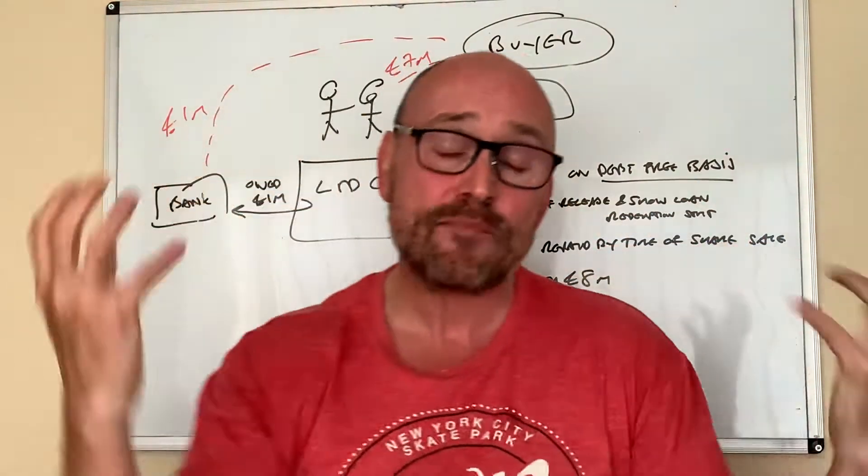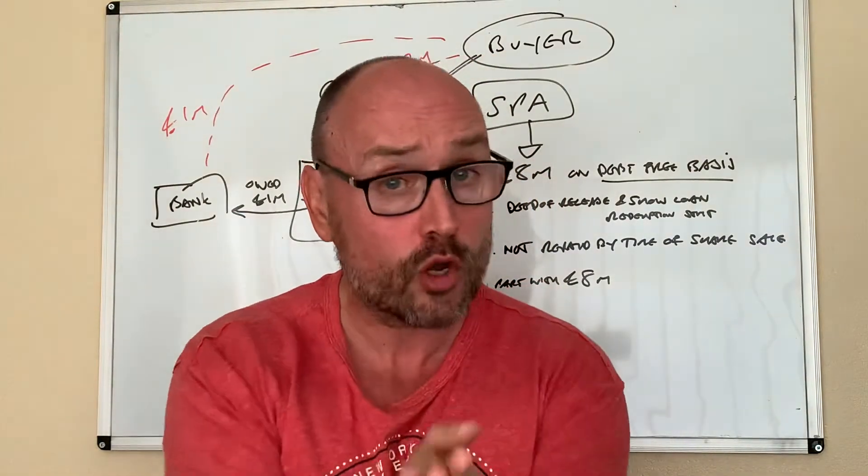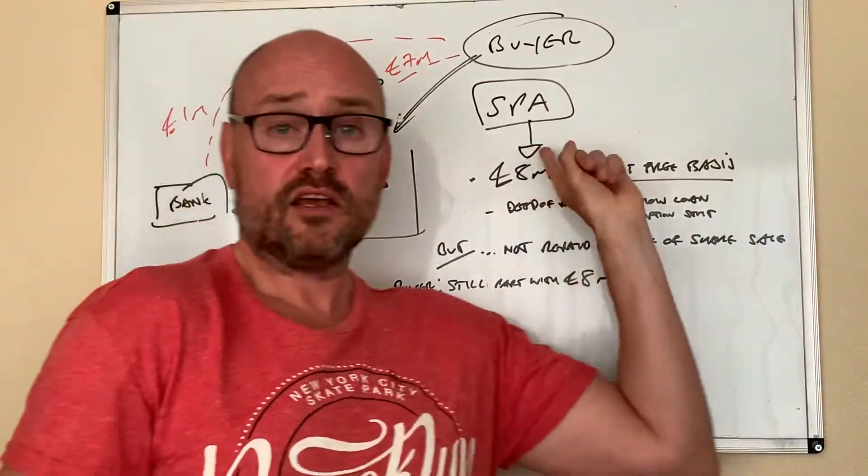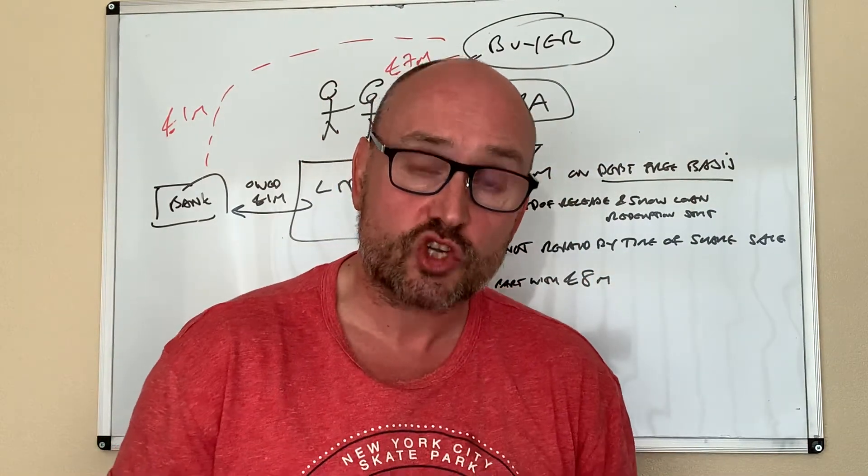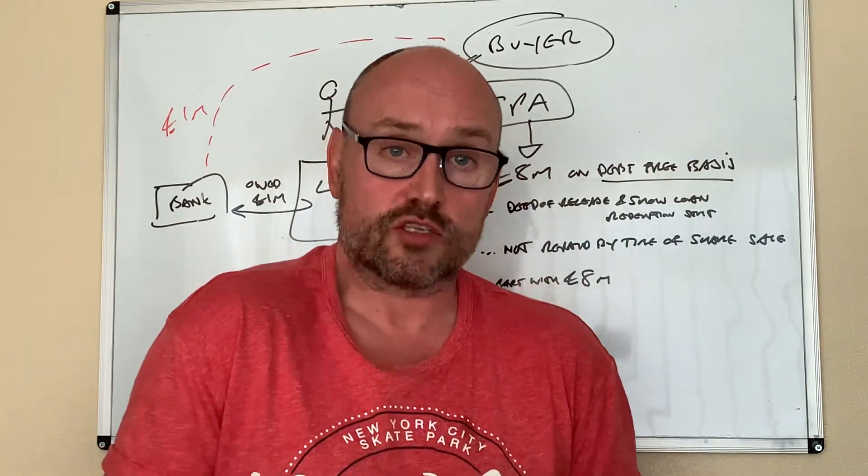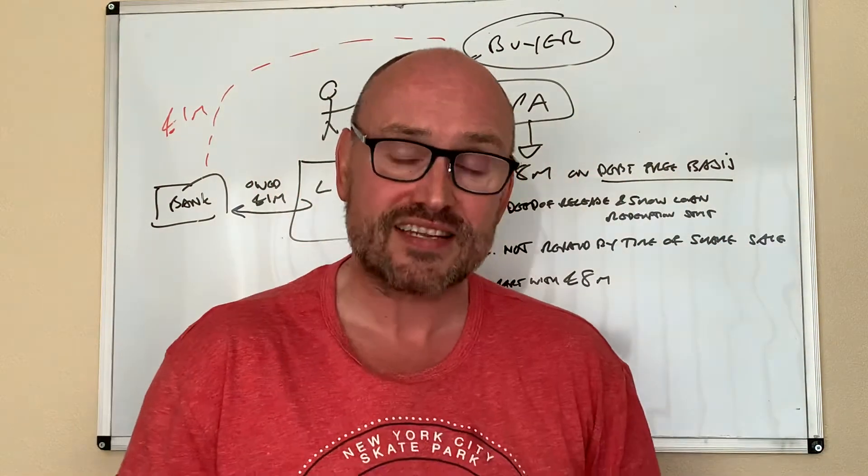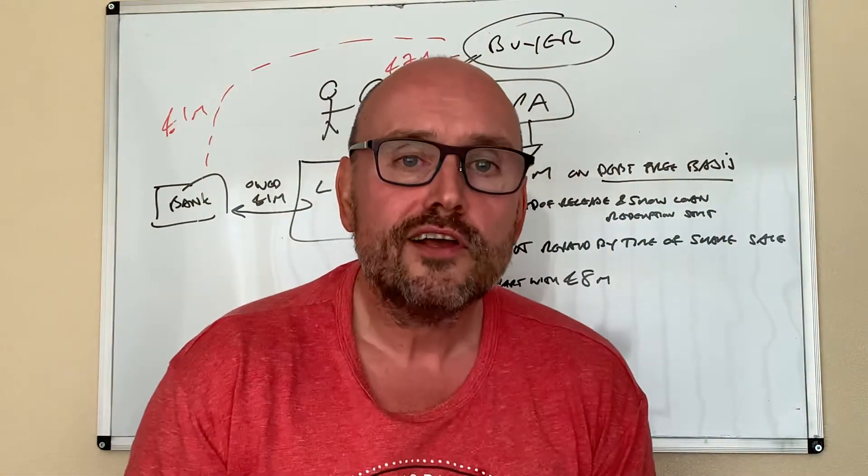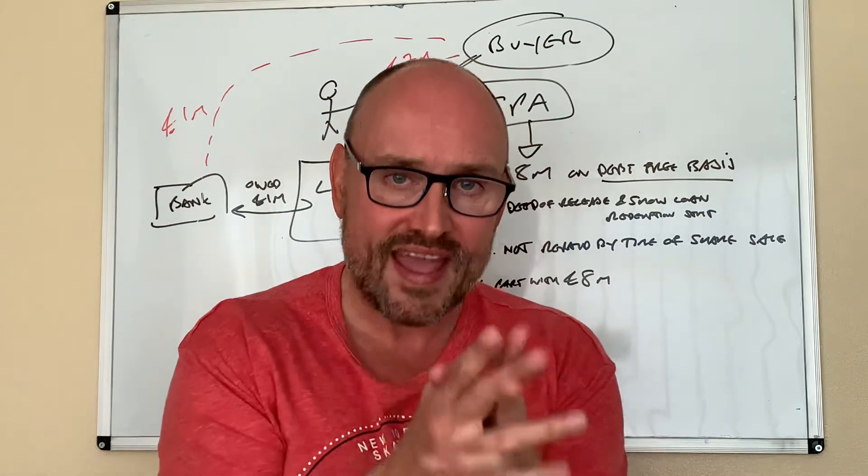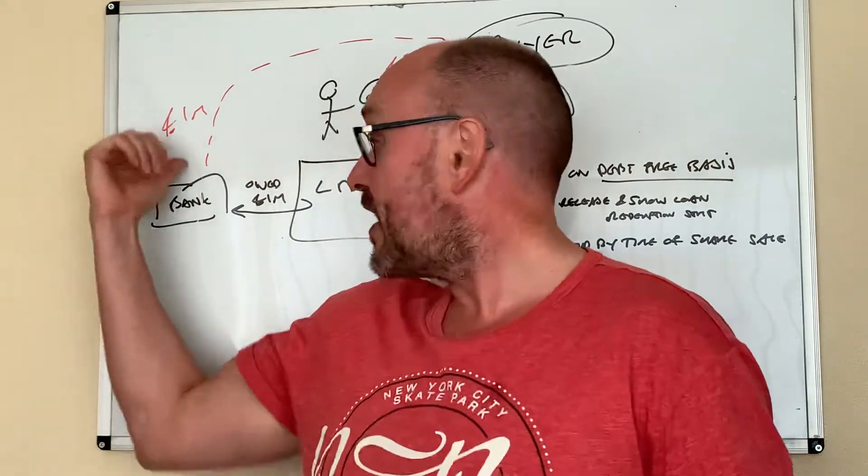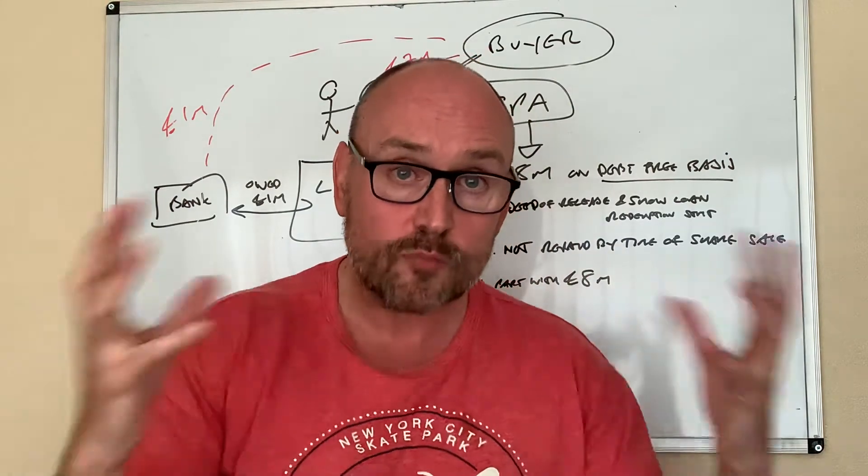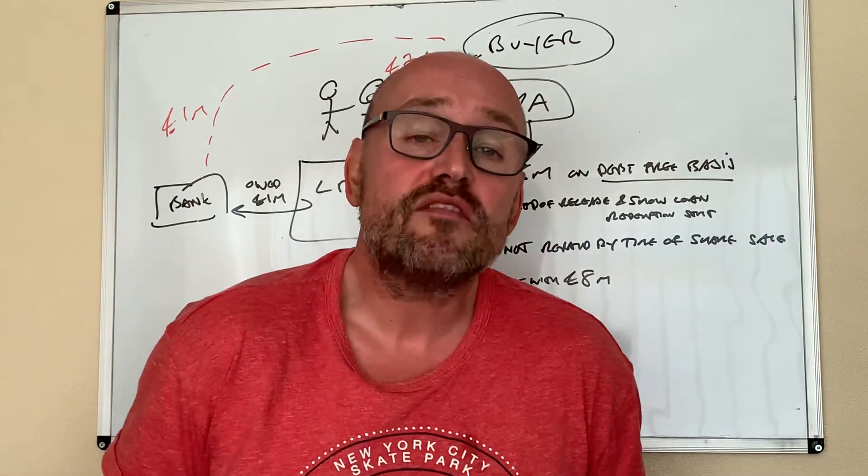Now this is just an example again of how you've got to get the paperwork right. Because had the SPA, had there been something that changed, a clause, this thing been rewritten and basically said, look, the buyer will pay seven million for the shares and pay off the bank one million. If that was all part of the deal in writing, that would have been fine, but it wasn't.